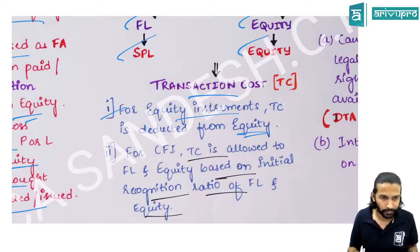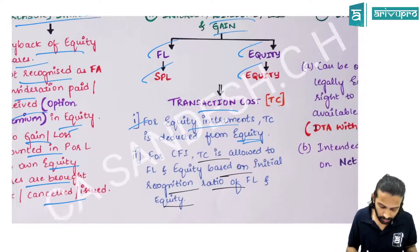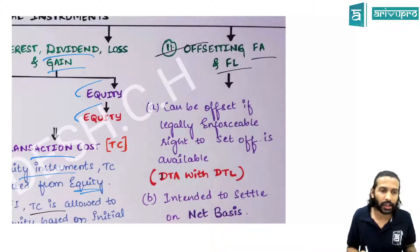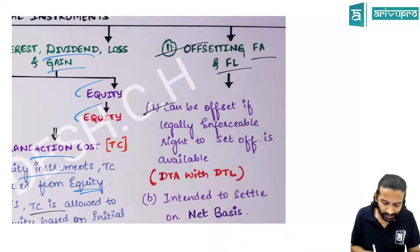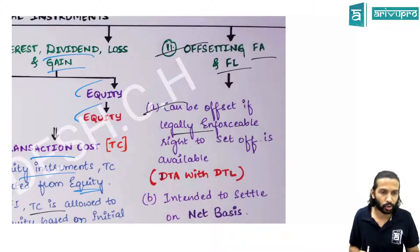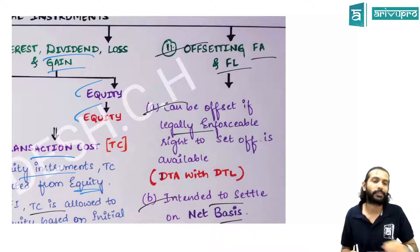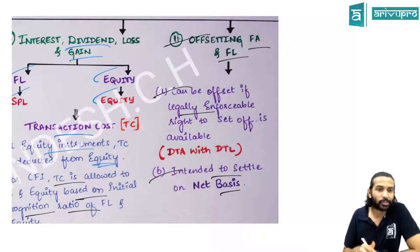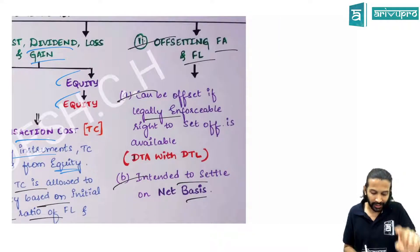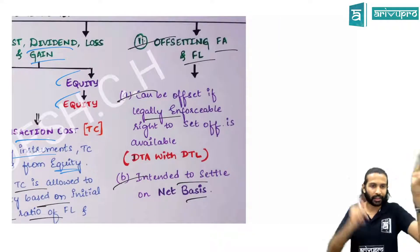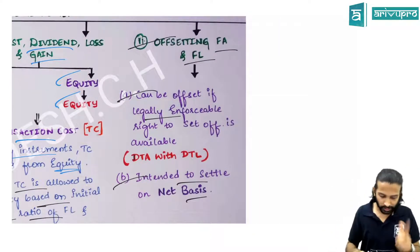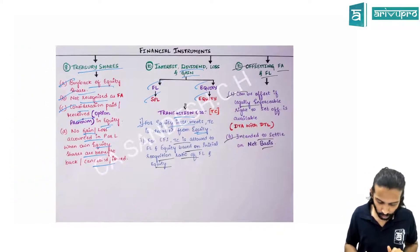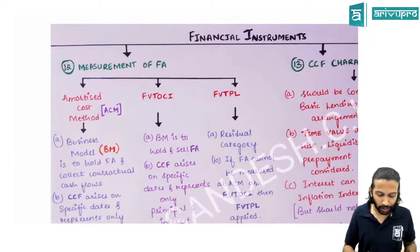Offsetting of financial assets and financial liabilities is permitted provided two conditions are satisfied: you have a legal right to offset, and you also intend to do so. A tripartite agreement example was used to illustrate the offsetting concept.